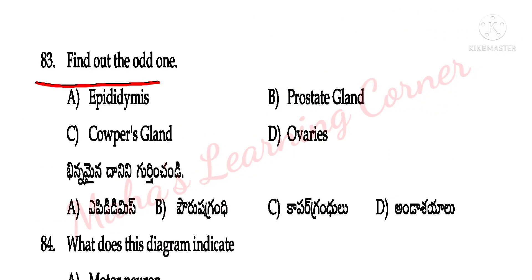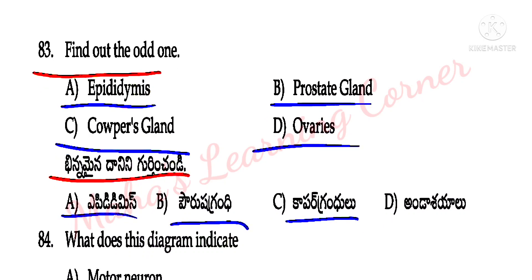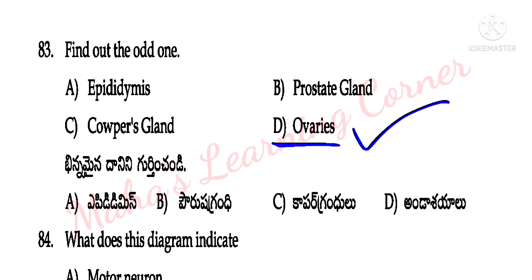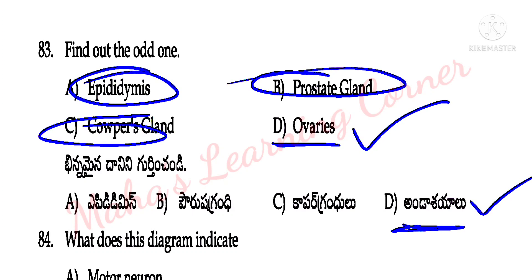Find the odd one out. Options: epididymis, prostate gland, corpus gland, ovaries. Correct answer: option D — ovaries. All the others belong to the male reproductive system.